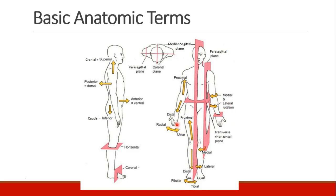Finally, when talking about the limbs, we can refer to the bones of the distal part of the extremity. We can talk about something being more radial, which means towards the thumb, which is where the radius connects, or being more ulnar, which is towards the pinky finger, which is where the ulna connects. And the same can be done in the foot — things can be referred to as being more fibular or more tibial.